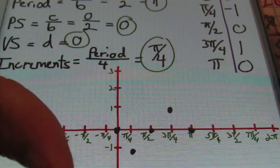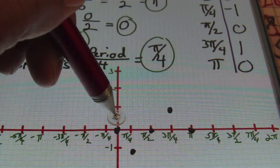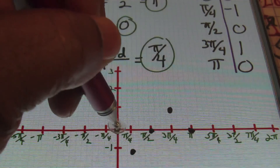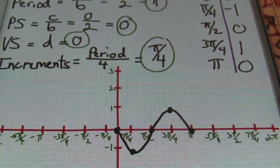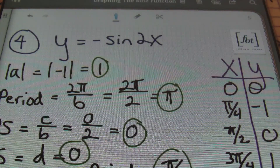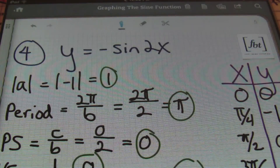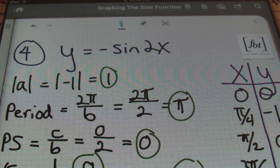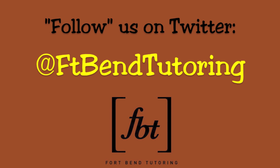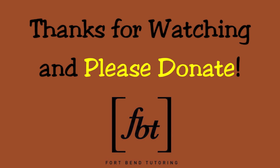Notice that because of the b value of 2, we have a horizontal compression — the entire sine function occurs over half the normal length, going from 0 to π instead of 0 to 2π. Connect the dots and that's the graph for problem four: y = –sine(2x). That does it for today's lesson on graphing the sine function — I hope that helped you greatly. Please rate, comment, and subscribe. This is Mr. Witt with Fort Bend Tutoring. Thanks a lot, bye.